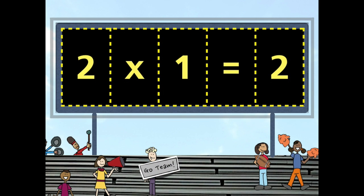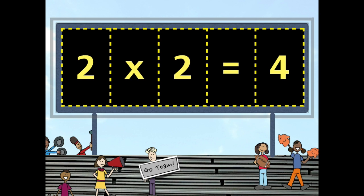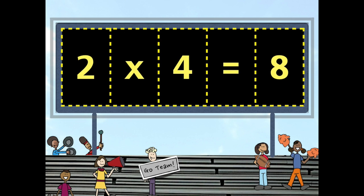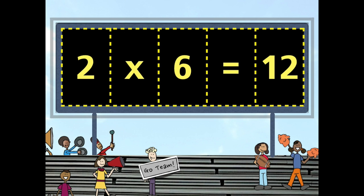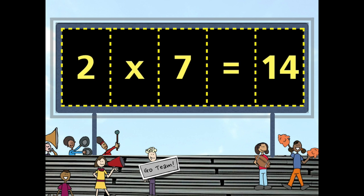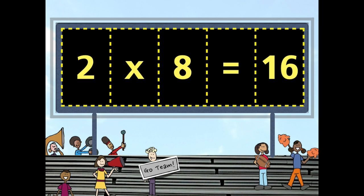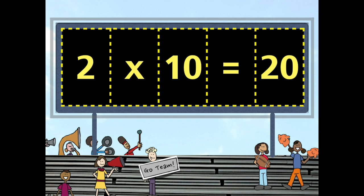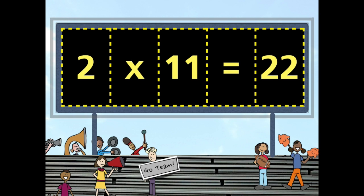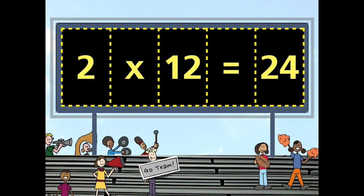Let's multiply by twos. 2 times 1 is 2, 2 times 2 is 4, 2 times 3 is 6, 2 times 4 is 8, 2 times 5 is 10, 2 times 6 is 12, 2 times 7 is 14, 2 times 8 is 16, 2 times 9 is 18, 2 times 10 is 20, 2 times 11 is 22, 2 times 12 is 24.